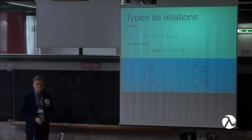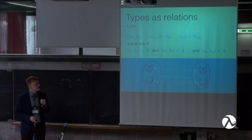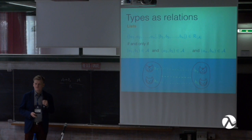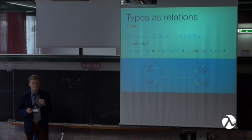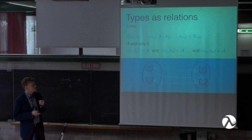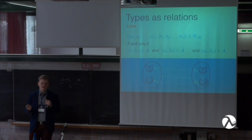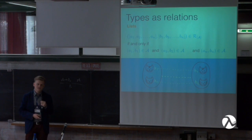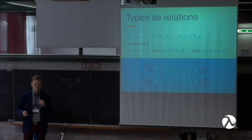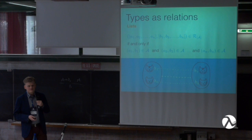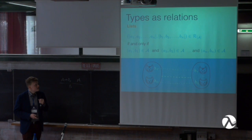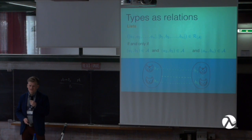We can also define relations for lists. Lists are usually defined as nested pairs using the cons operator. From the definition for pairs, we infer that lists are related when they have the same length and their respective elements are related: the first element of the first list must be related to the first element of the second list, the second to the second, and so on until the end. They share a common end because they have the same length.